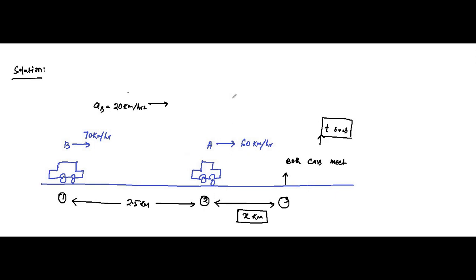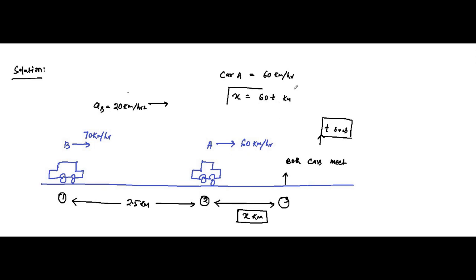Car A moves with a uniform constant velocity of 60 km/h. In time interval t hours, Car A covers distance x from point 2 to point 3: x = 60t kilometers. This is equation number one.